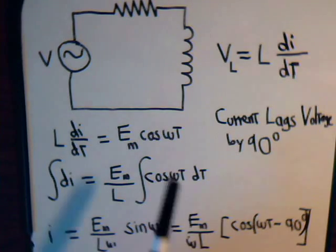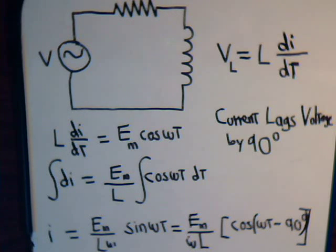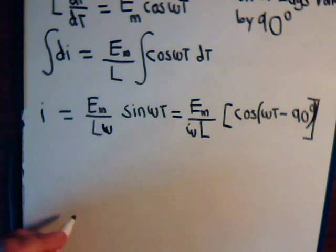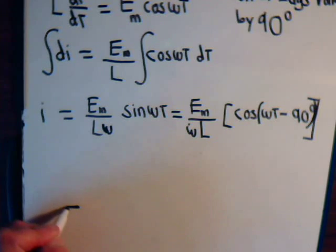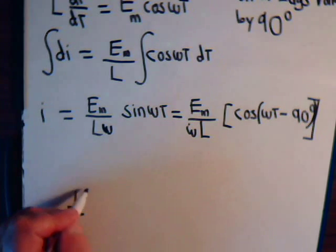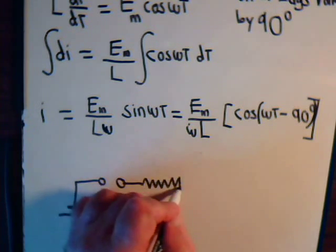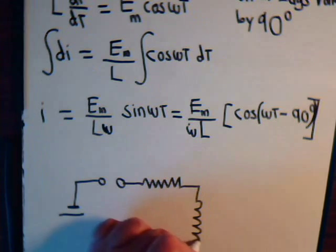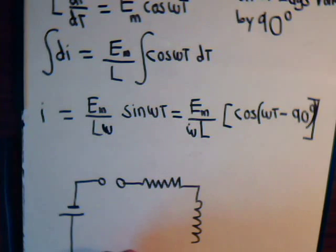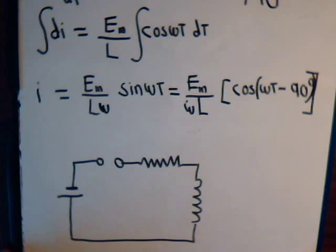If the voltage were a sine wave instead of a cosine wave, we get the same relationship — the current lags the voltage by 90 degrees. To build intuition, let's consider a simple direct current circuit: a battery, a resistor, and an inductor.